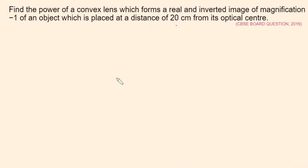Hello students, welcome back. Let's have a look at the next question. The next question is a numerical from the light chapter, particularly convex lens. Find the power of a convex lens which forms a real and inverted image of magnification minus one of an object which is placed at a distance of 20 centimeter from its optical center.